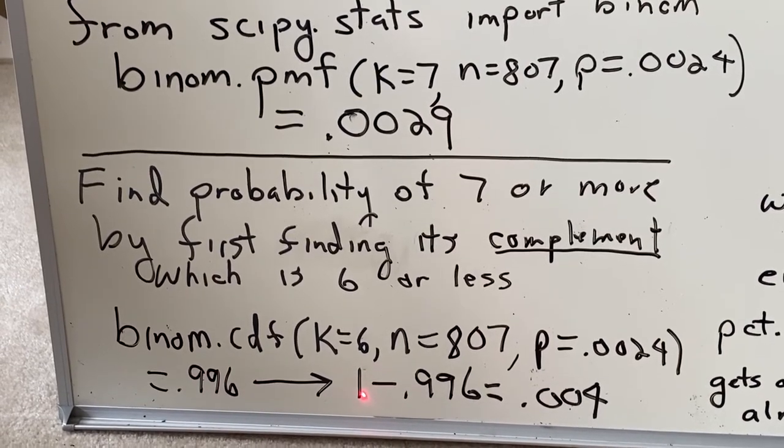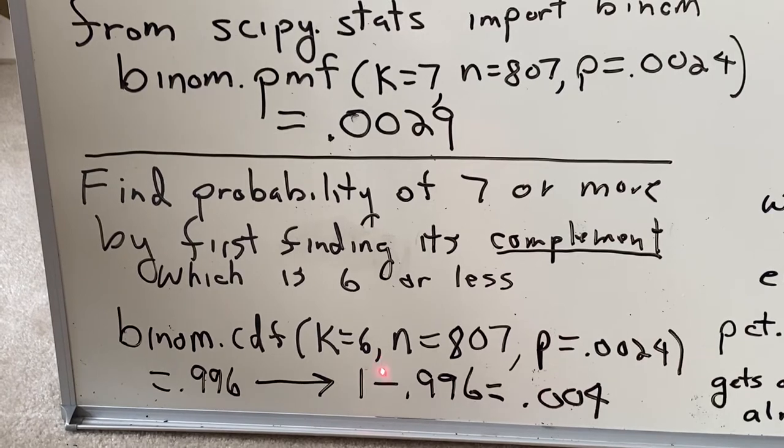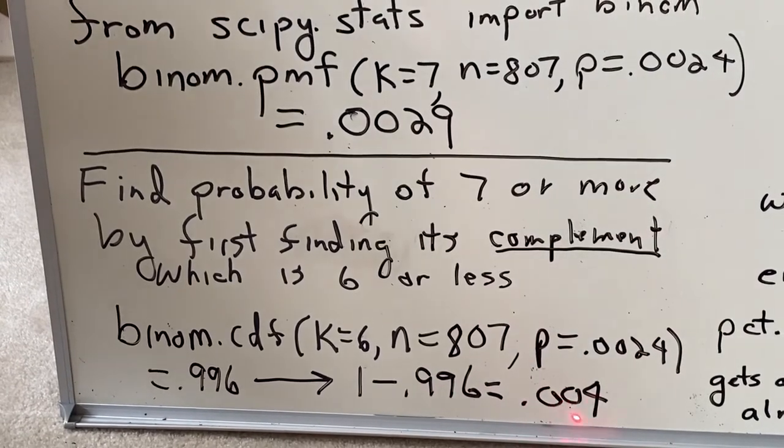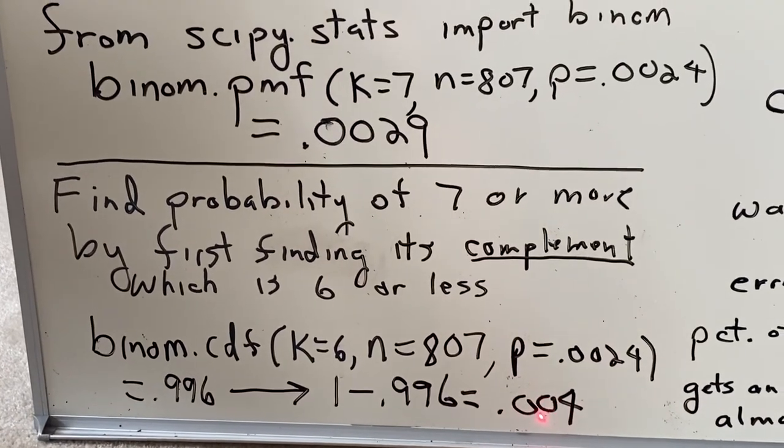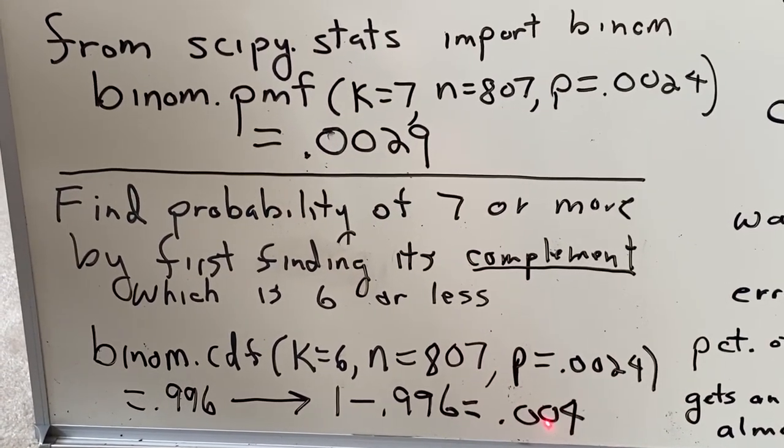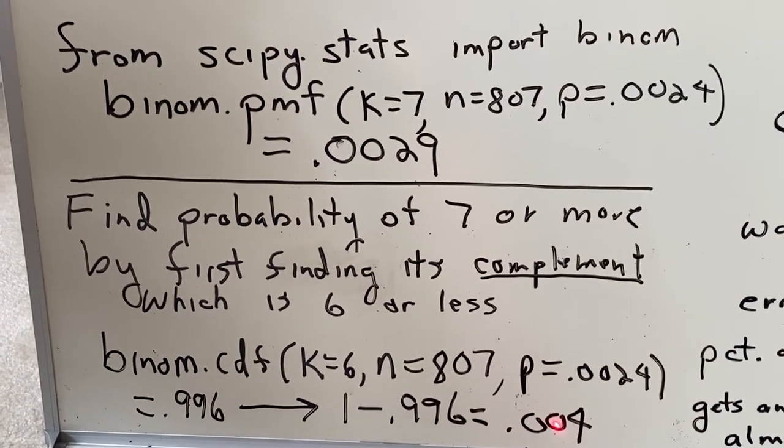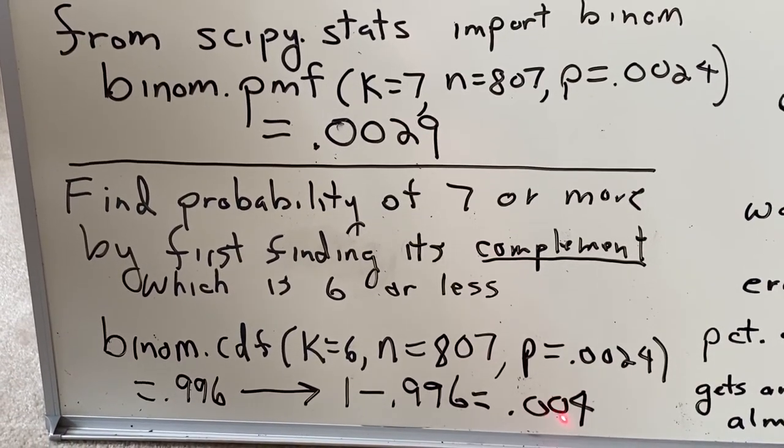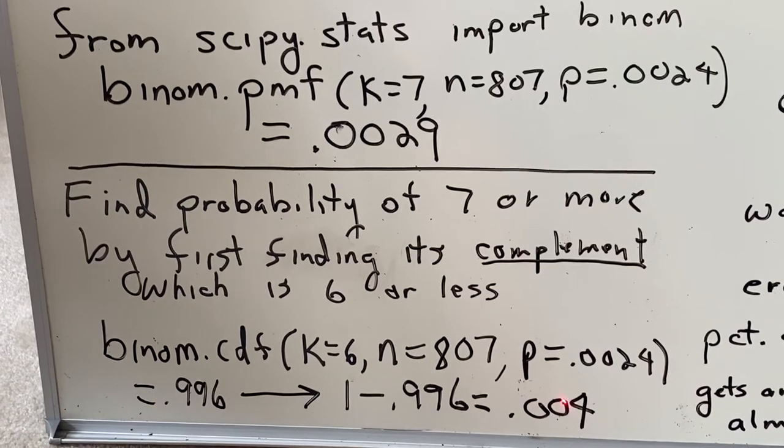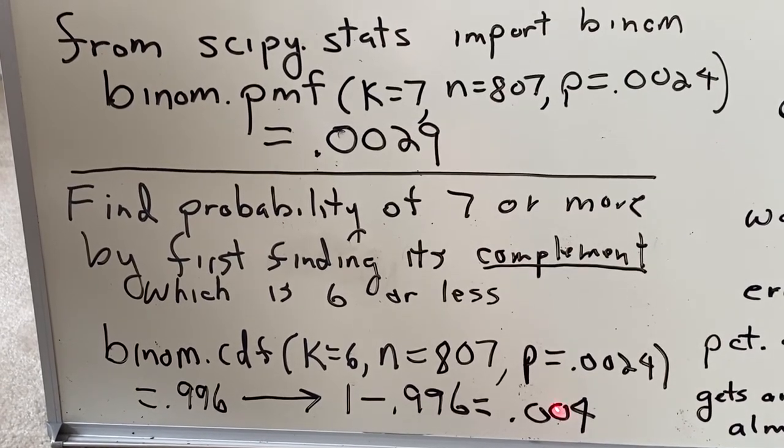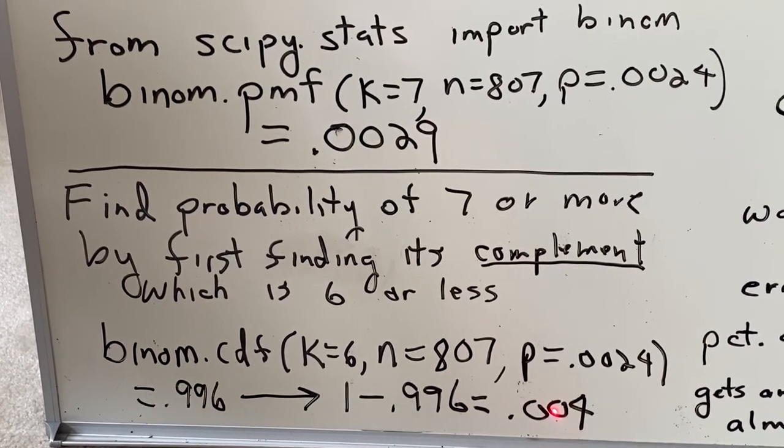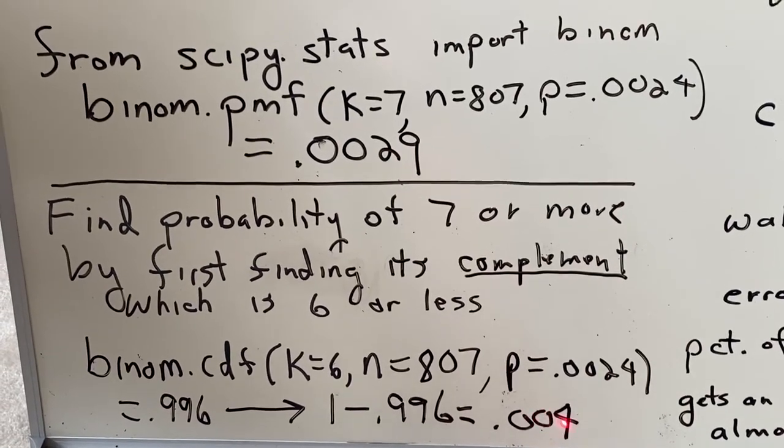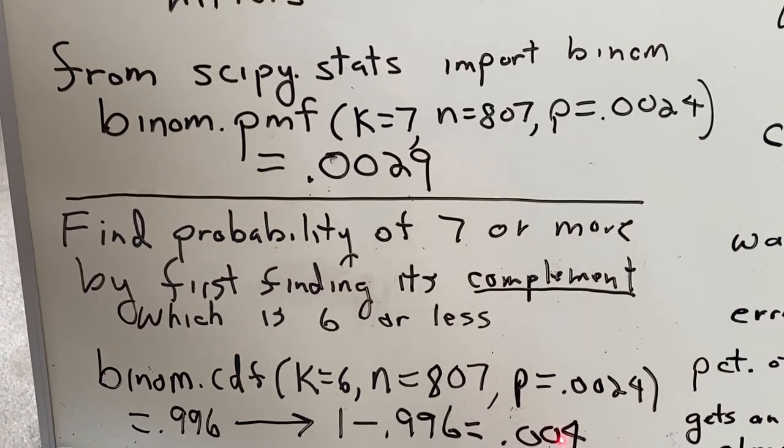What's the probability of 7 or more? It's 1 minus 0.996. That's 0.004. That is the probability, given our assumptions, that Nolan Ryan would have had 7 or more no-hitters in his career. That's about 1 in 250. So again, we're putting a number onto this rarity. It is quite rare, even for Nolan Ryan.